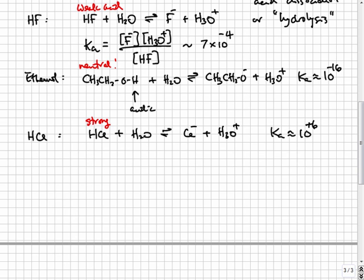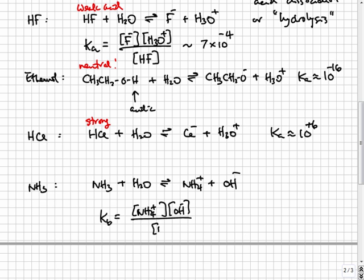Bases are similar but opposite. The action of a base in water is to grab a proton from H2O, making the conjugate acid of the base and OH-. For example, NH3 ammonia acting as a base in water undergoes the reaction NH3 plus H2O going to NH4+ plus OH-. The equilibrium constant for this is called the KB of ammonia. Ammonia is a rather weak base as KB is approximately 10 to the minus 5.